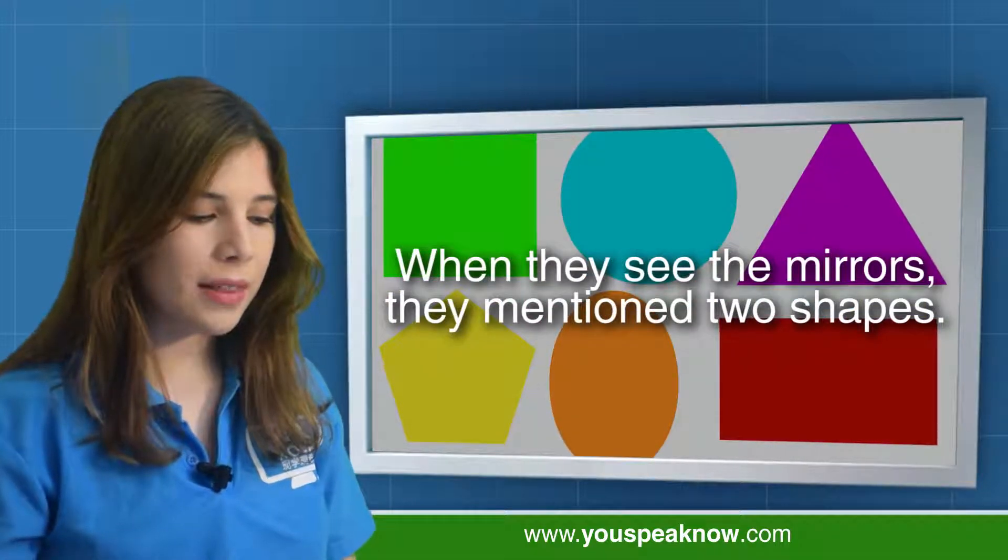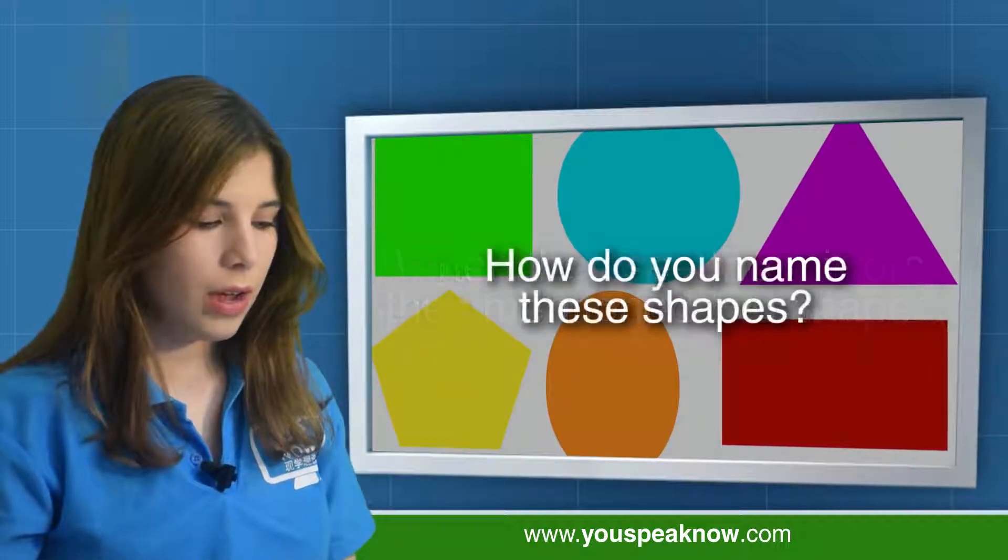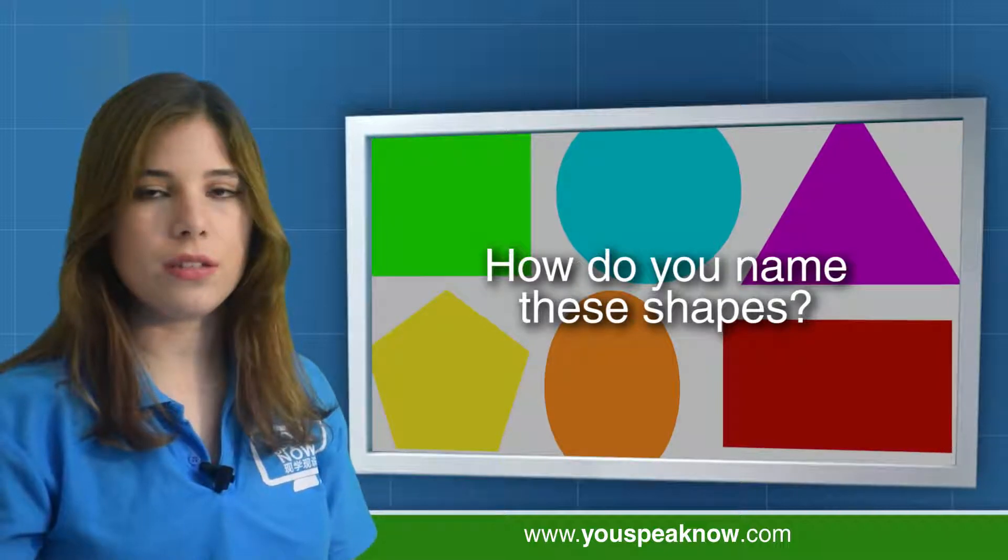When they see the mirrors, they mention two shapes. How do you name these shapes?